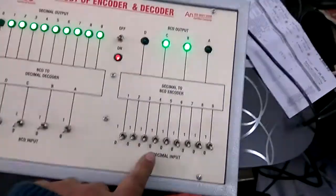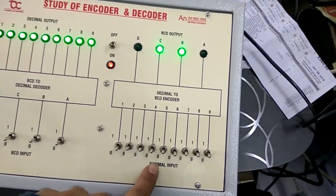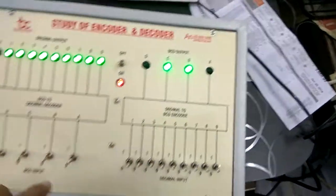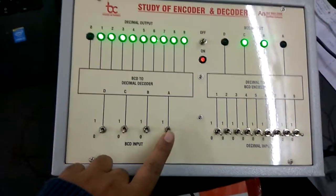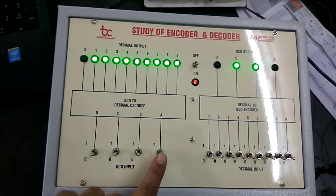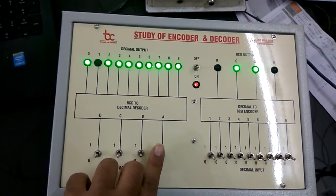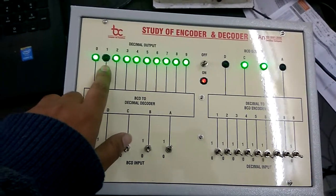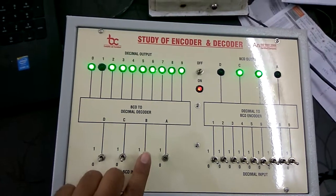Similarly, in this section we have decimal inputs and BCD outputs. So when we give zero zero zero zero, the zero LED will be turned off. Then when we give it one, one LED will be off.